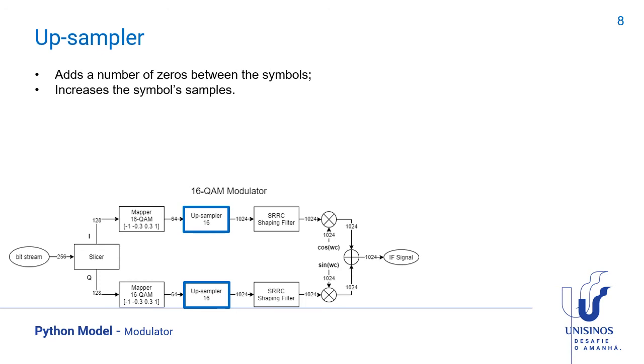Now that we know the arrays with all the symbols from both arms of the modulator, the upsampling block is implemented. We use the factor of 16 samples for the simulation. The block increases the symbol samples, adding zeros between each value. Since the factor is 16, fifteen zeros are inserted in between the symbols.